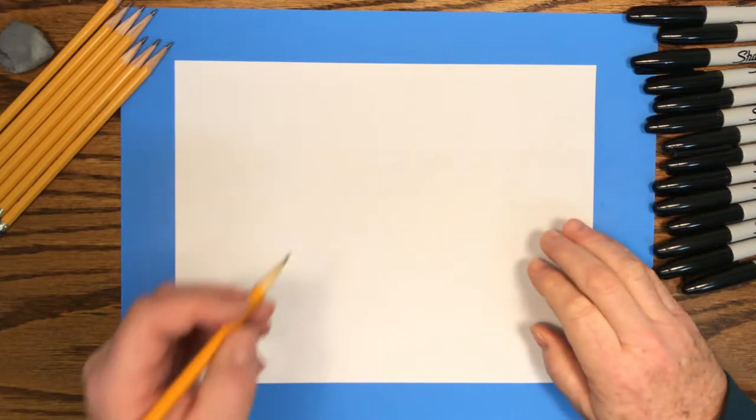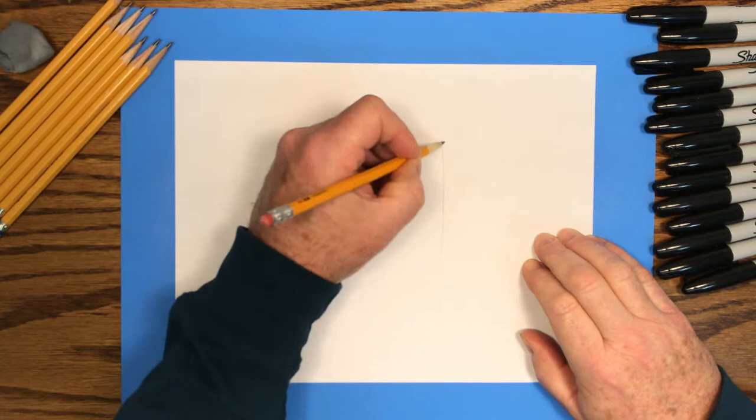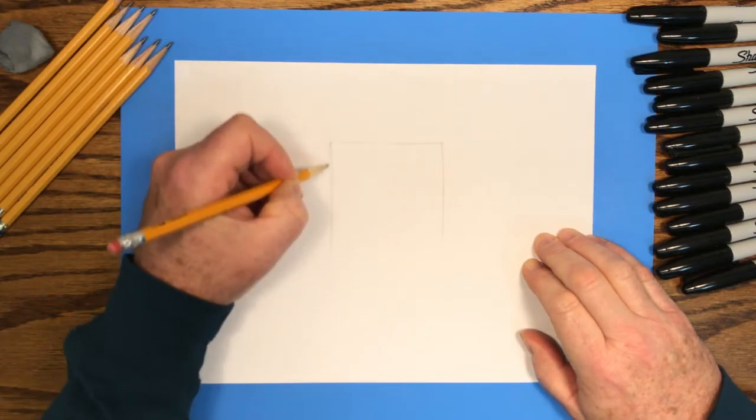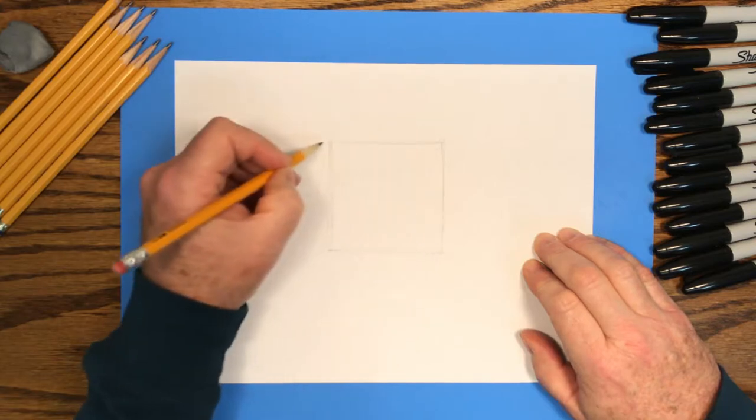We'll start with a pencil and draw the main shape of this character, which is a square. Draw very lightly with the pencil because we'll come back later and trace our pencil lines with a black marker. We're drawing the shapes just so we know where to put our black marker lines.